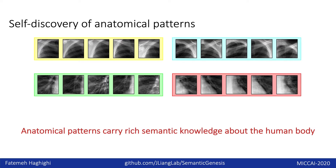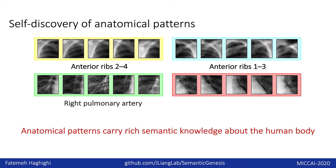For example, these 4 samples of anatomical patterns carry local information of anterior ribs 2–4, anterior ribs 1–3, right pulmonary artery, and left ventricular. The self-discovery process results in a new dataset of such patterns associated with their semantic labels.